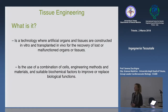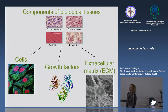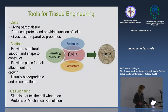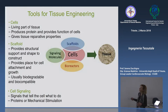Cosa vuol dire ingegneria tessutale? È una tecnologia che costruisce sostanzialmente organi e tessuti, combinando quelli che sono i componenti normali dei tessuti biologici: cellule, una matrice extracellulare e fattori di crescita, o segnali — perché questi segnali possono essere veri e propri fattori di crescita, ma anche stimolazioni meccaniche che inducono le cellule seminate su scaffold a esercitare certi tipi di funzione.